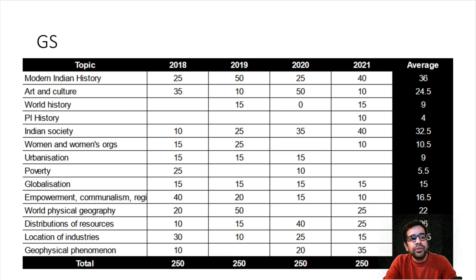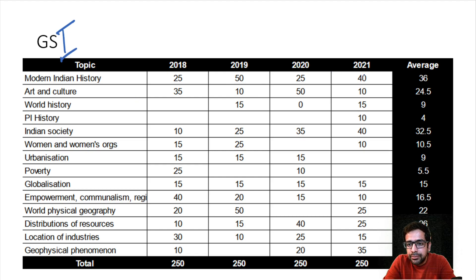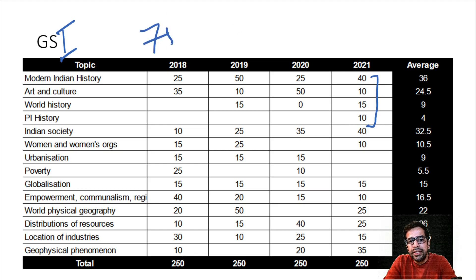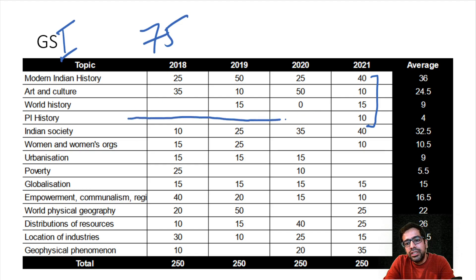Let's begin with GS1. If we look at GS1, we have about 4 topics in modern Indian history and they total to about 75 marks. One important thing we notice is that in post-independence history, there was no question in many years, but this year there was one question. Overall, art and culture, which was given quite a lot of weightage last year, has been reduced.